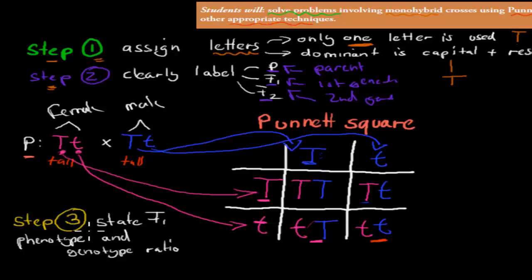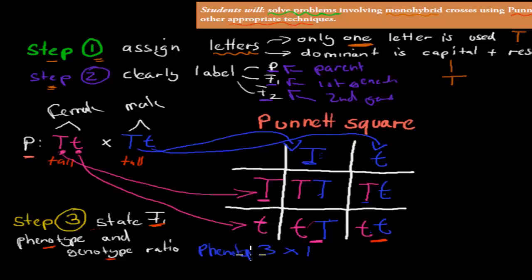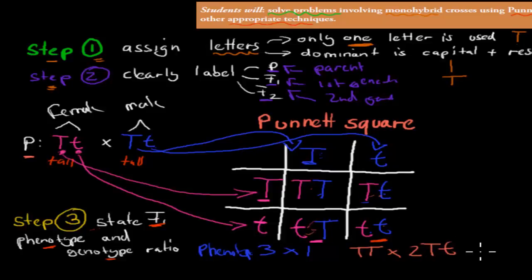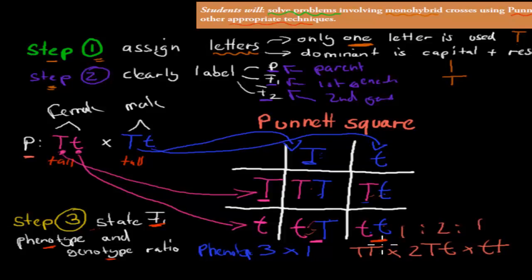Now we state the F1 ratios — phenotype and genotype. The phenotype ratio: three tall to one short, so 3:1. The genotype ratio: one homozygous dominant (TT), two heterozygous tall (Tt), and one homozygous recessive short (tt) — giving a 1:2:1 ratio for the genotype.